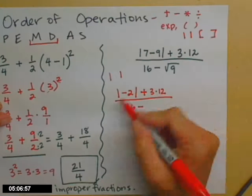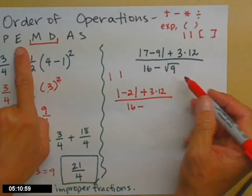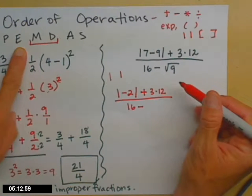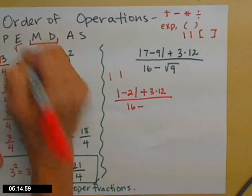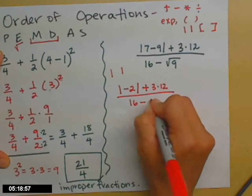Square roots are actually, since I don't have any more parentheses, I'm skipping ahead. Square roots are the same thing as exponents. So exponents and square roots have the same power. So square root of 9 is 3.